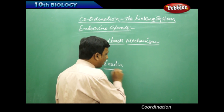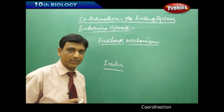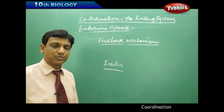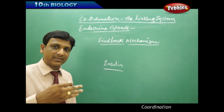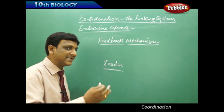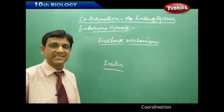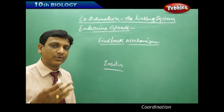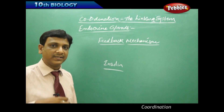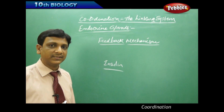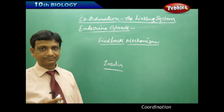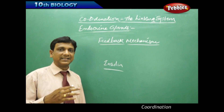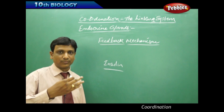When there is a large amount of glucose in your food, insulin is produced. If the blood sugar level comes to normal, then the production of insulin is decreased or ceased. So the rate of production of hormone is controlled depending upon the internal environment. This is called feedback mechanism.